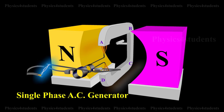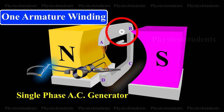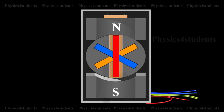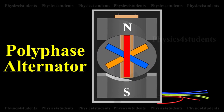A single-phase AC generator or alternator has only one armature winding. If a number of armature windings are used in the alternator, it is known as a polyphase alternator.